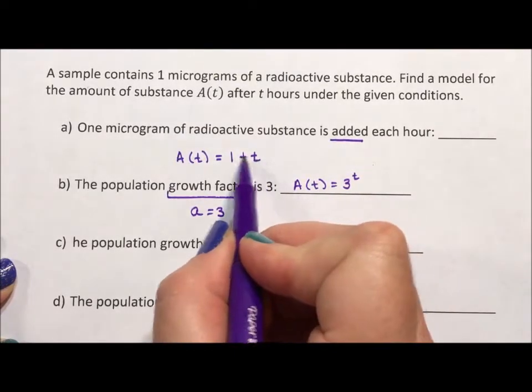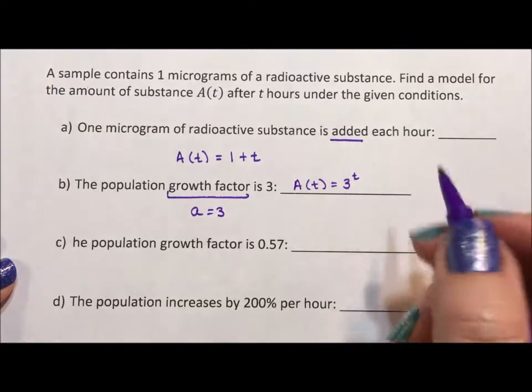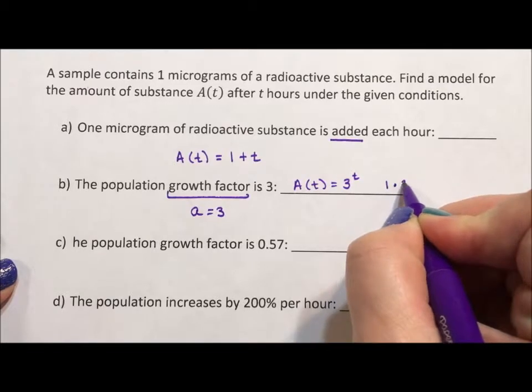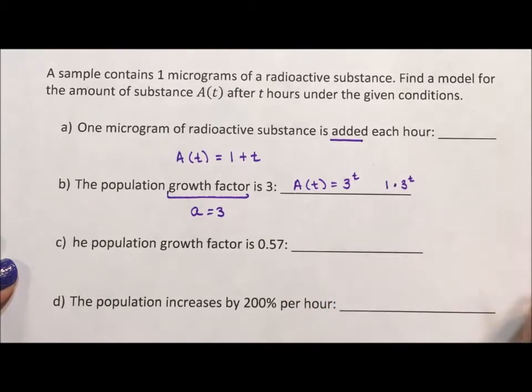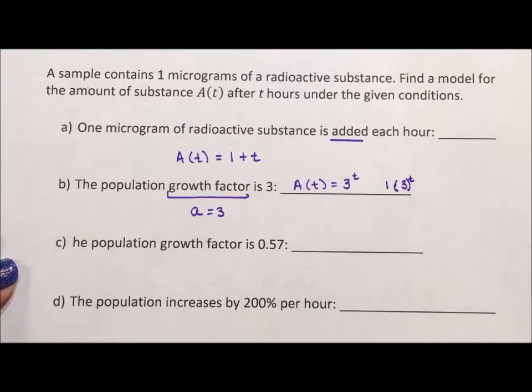If you put zero in here, you get one. The initial has to be one. So I could have written this as 1 times 3^t, but it seems silly to put that one in there. When it's one, I usually don't write it.